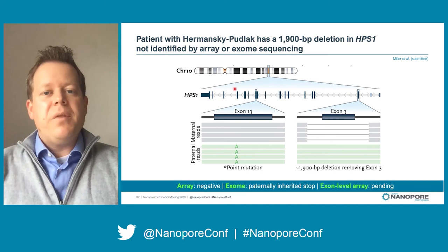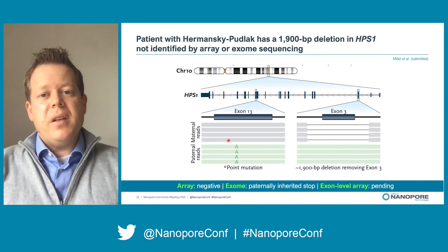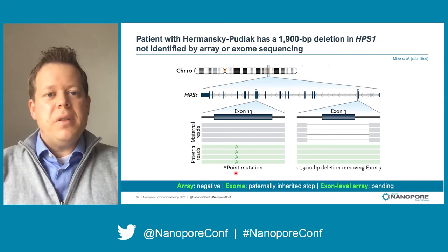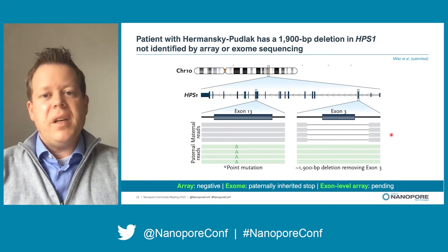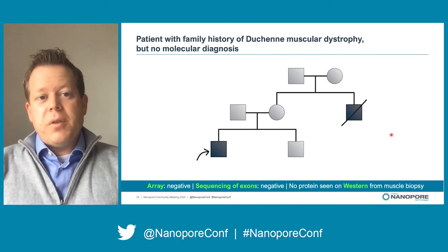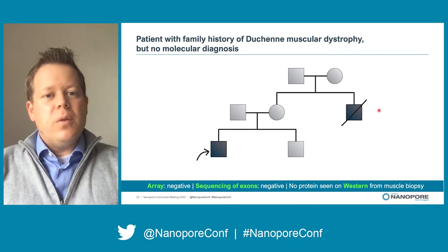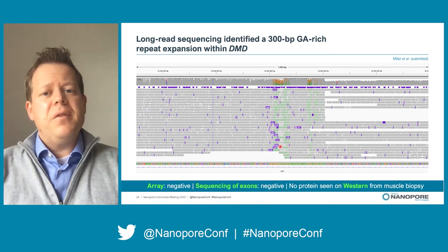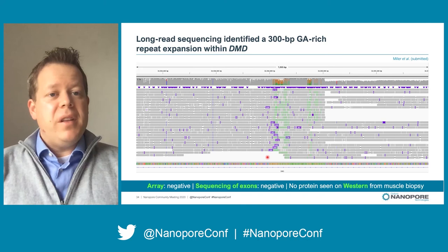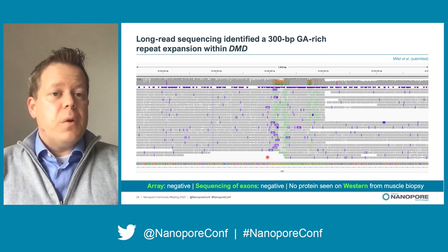In this case, a child with Hermansky-Pudlak syndrome was found to have a paternally inherited stop in HPS1 — the gene associated with the disease — but no second hit. She also had a negative array. We targeted the gene and found a 1900 base pair deletion that both the array and the exome missed. We PCR-validated this, and clinical validation using an exome-level array is pending. The final example is from a patient with a diagnosis of Duchenne muscular dystrophy but lacking a genetic diagnosis — a young boy whose maternal uncle died in his 30s of muscular dystrophy and whose course is following his uncle's. He has an unaffected older brother and an extensive unrevealing workup. We sequenced DMD, which covers just over two megabases, and found no missense or intronic variants, but we did find an interesting structural variant — a 300 base pair expansion of a GA-rich repeat within an intron.